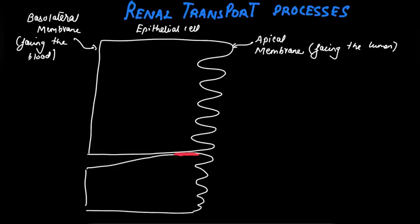The first transport process is the operation of the basolateral sodium-potassium ATPase pump — that is primary active transport. I'll be drawing the sodium-potassium ATPase pump. It is an ion pump and its main function is to pump out sodium ions from the cell.